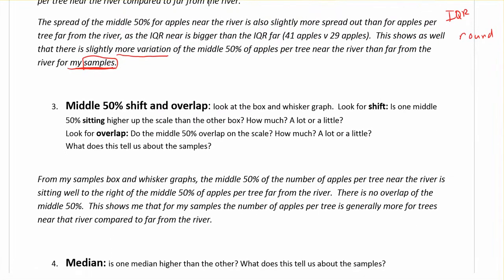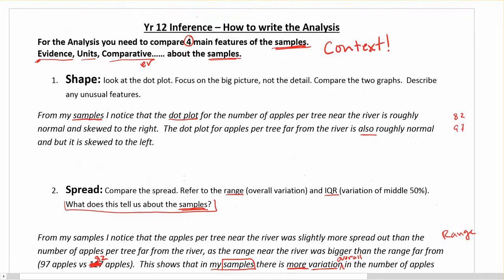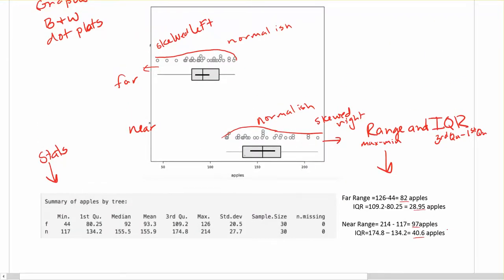Next is the middle 50% shift and overlap. This involves taking a look at our box and whisker graph. For the shift: is one middle 50% sitting slightly higher up the scale than the other? Is it a lot or just a tiny bit? For overlap: do the middle 50% overlap on the scale, and is that a lot or a little? Looking at our graph, I notice that the middle 50% near the river is sitting further up the scale — pushed higher than where the far from the river is. There is no overlap between the middle 50%, so the number of apples per tree near the river is sitting much further up the scale with no overlap.